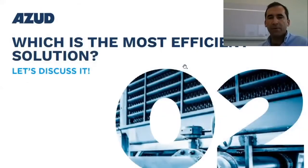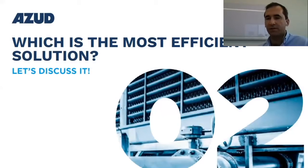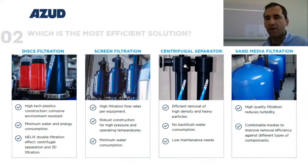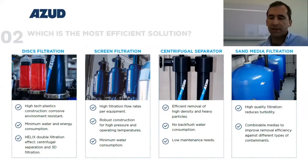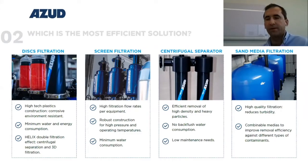What will be the most efficient solution when we're talking about filtration for cooling towers? There are many options. Here we have four types of filtration technologies. First is disc filtration — each one of them has, of course, strengths and limitations. Let's talk a little bit about each one.